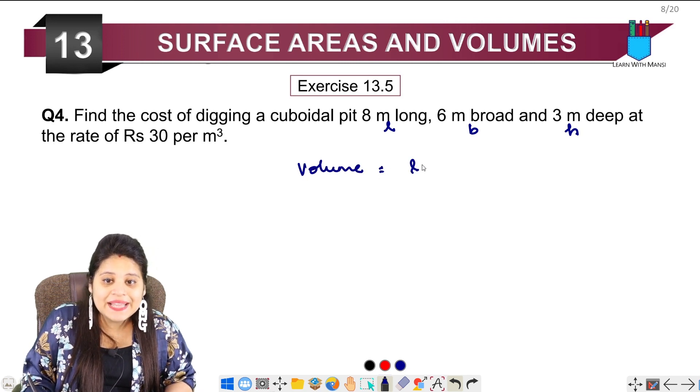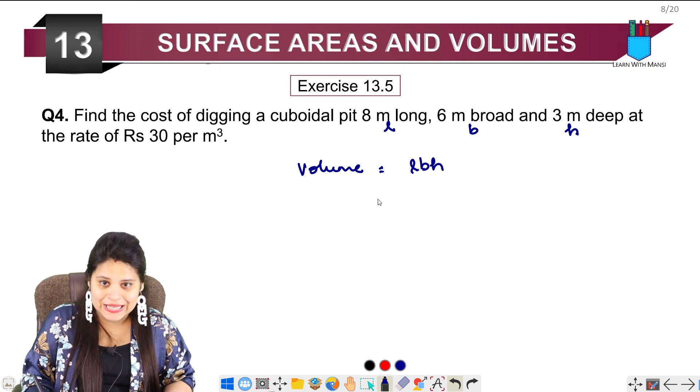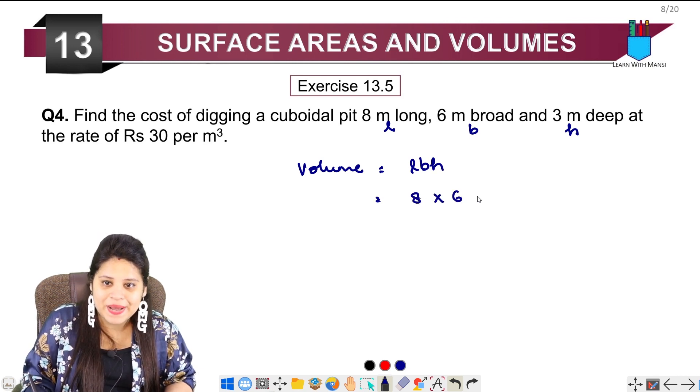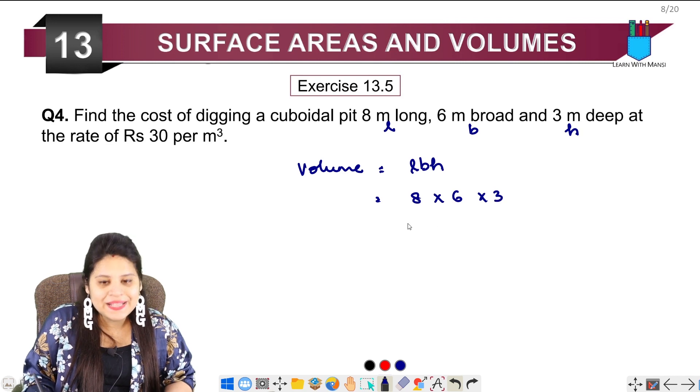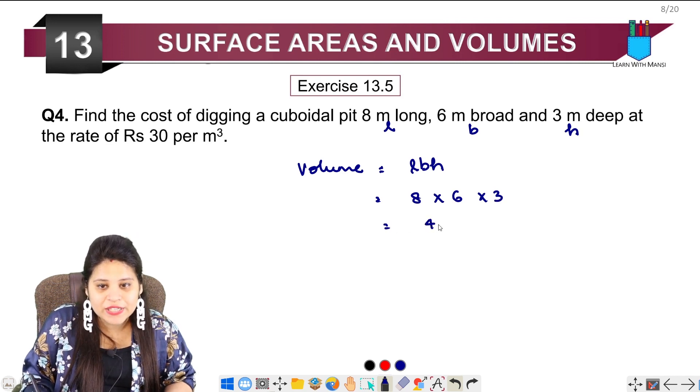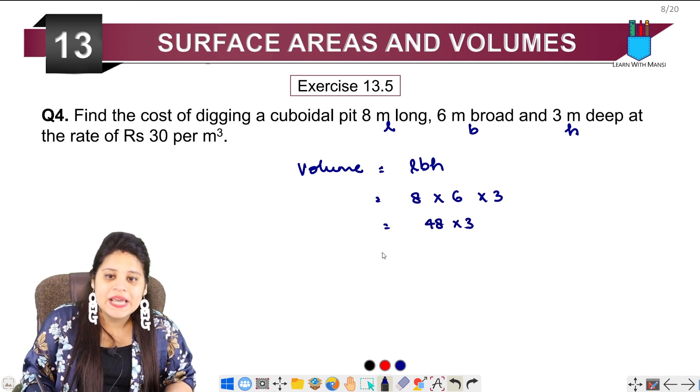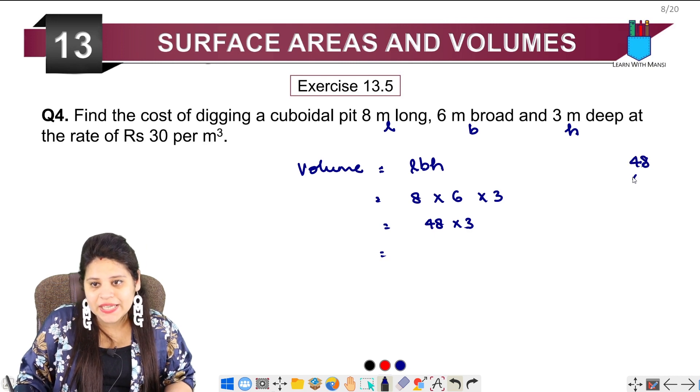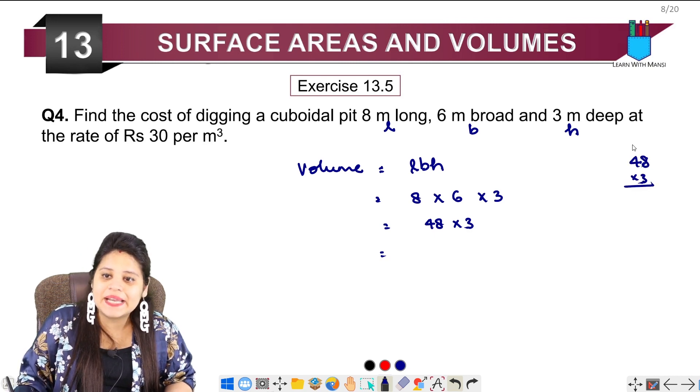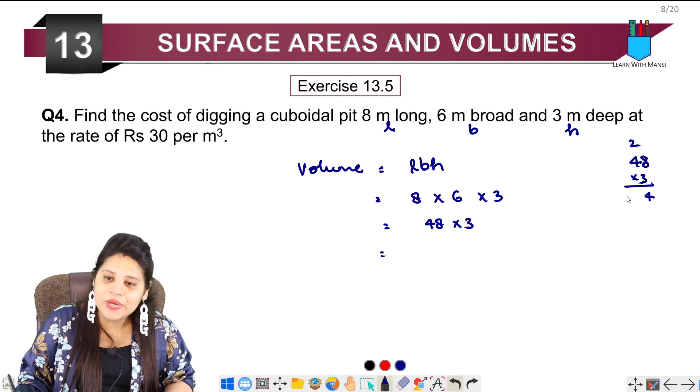First, we have to calculate volume by taking length times breadth times height. So the length is 8 multiplied by 6 multiplied by 3. 8 times 6 is 48 into 3. We multiply 48 by 3: 3 times 8 is 24, then 3 times 4 is 12, carry 2 to get 14.